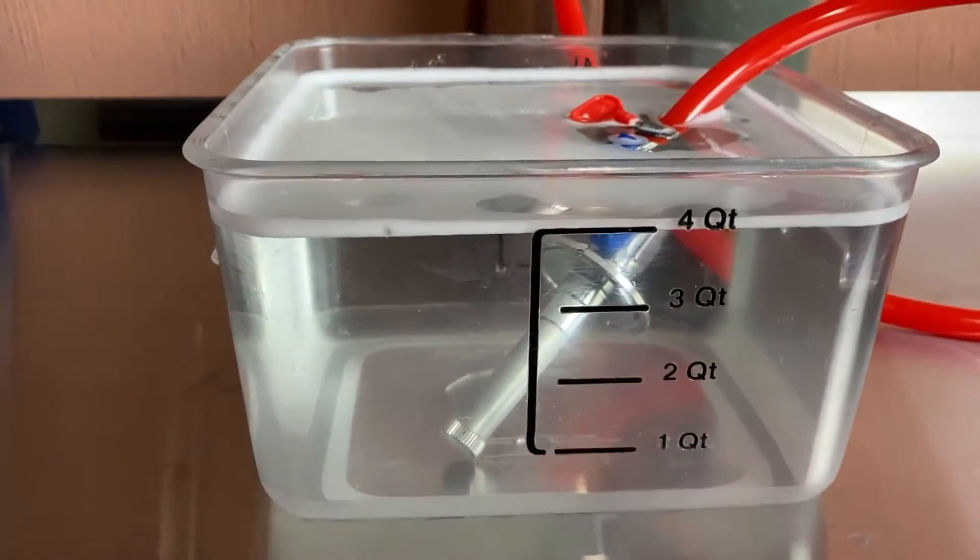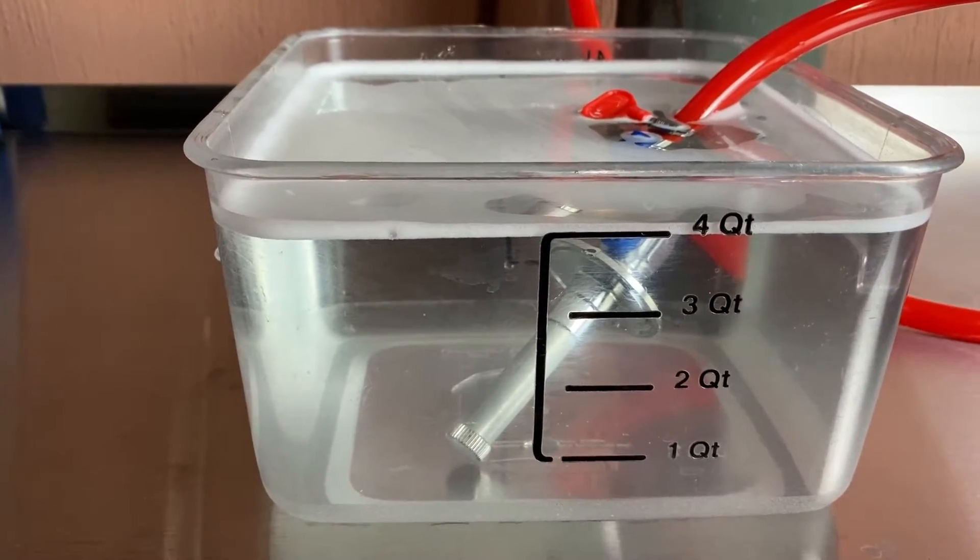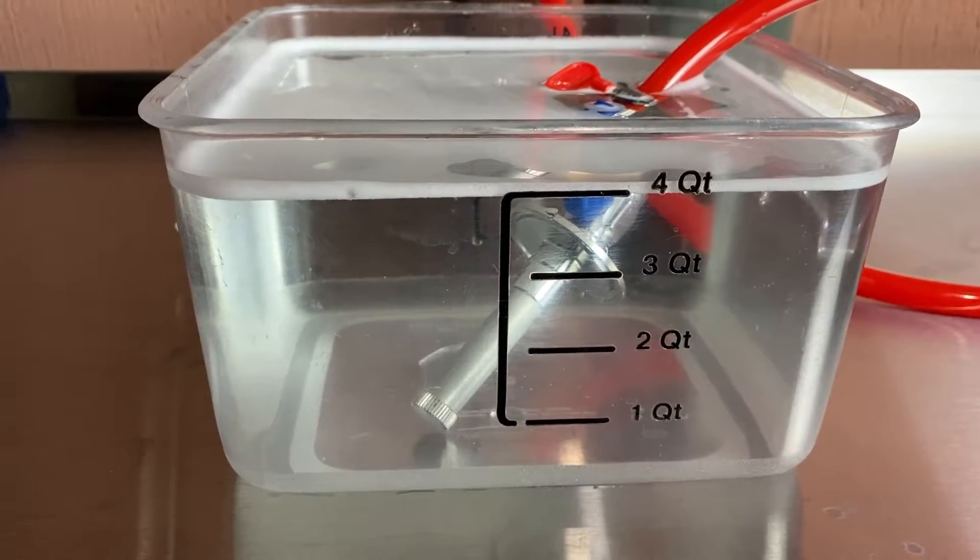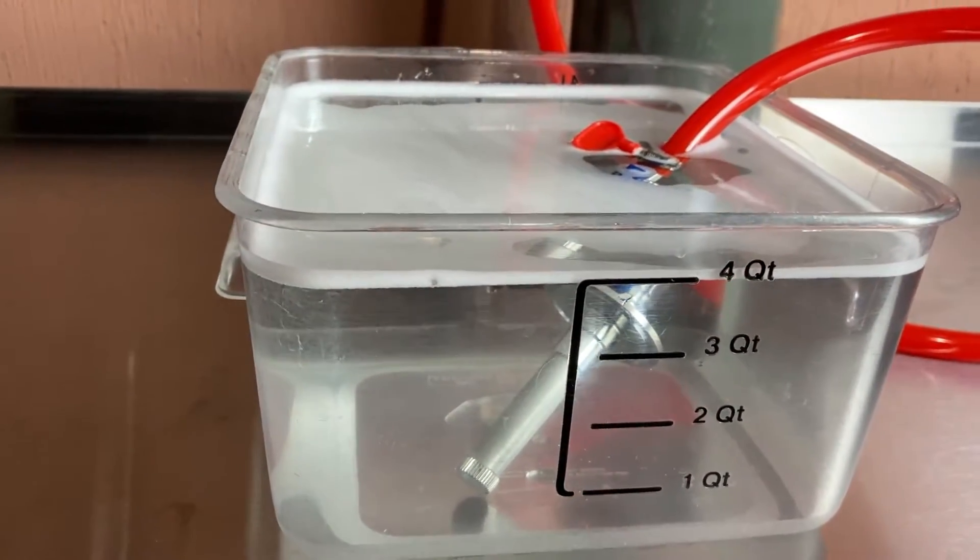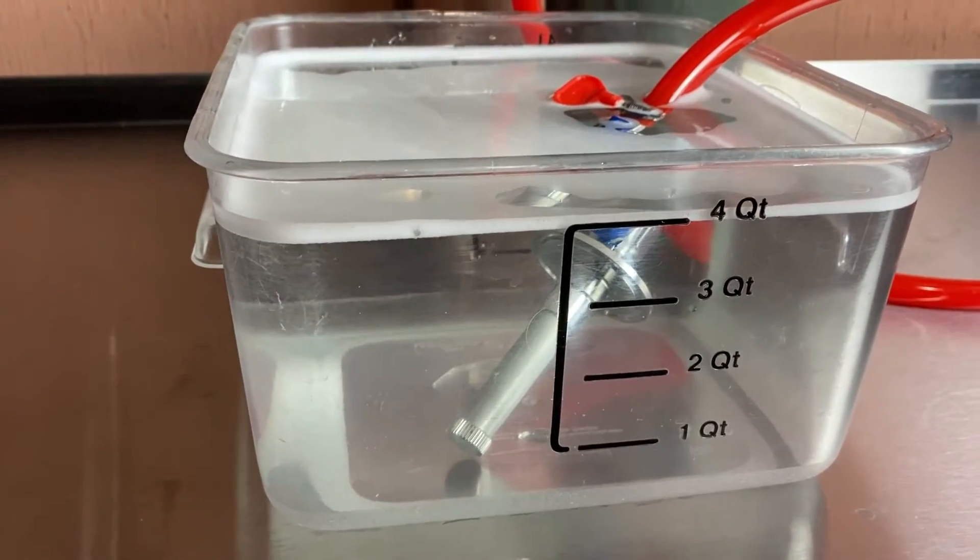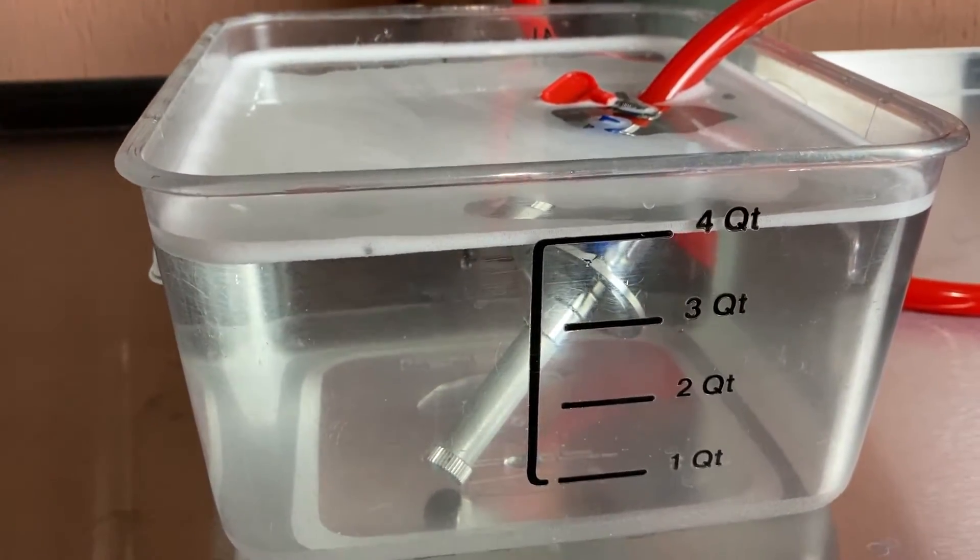Basically what you need to find out before you carbonate your own beer using a carbonation stone is the wetting pressure of the stone, which is basically how many psi of gas you need to run through your stone before you actually get bubbles through it.